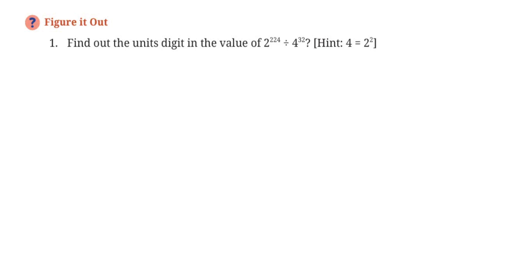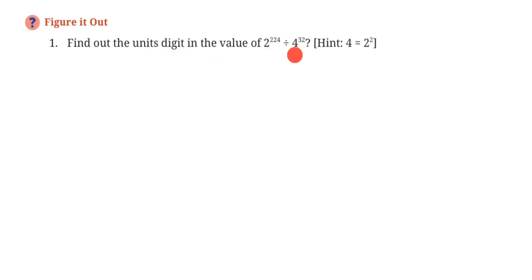Hey everyone, here's a question from Power Play of Class A, based on the new syllabus. This is the second 'Figure It Out' section, first question. The question is: find out the units digit in the value of 2 raised to the power 224 divided by 4 raised to the power 32. They have given a hint, but most of the time they will not give you a hint — you have to figure it out yourself.